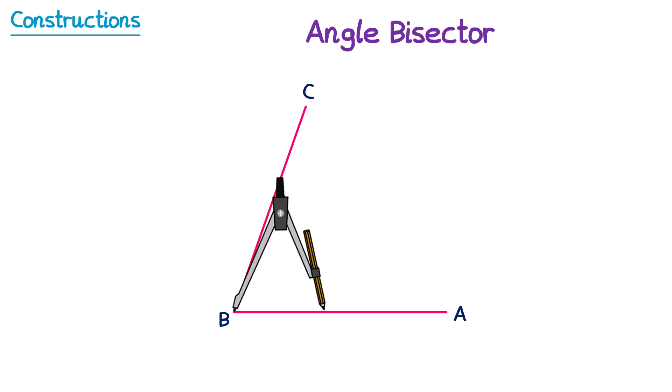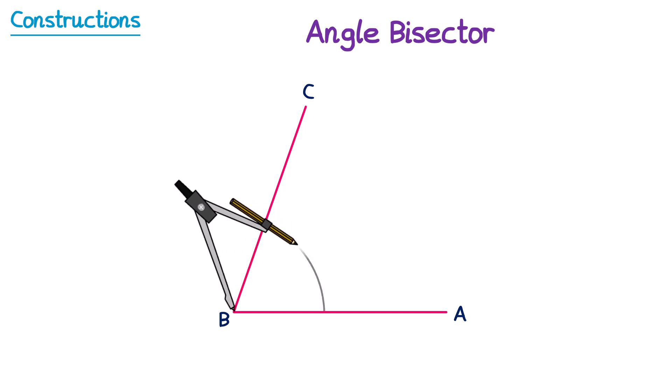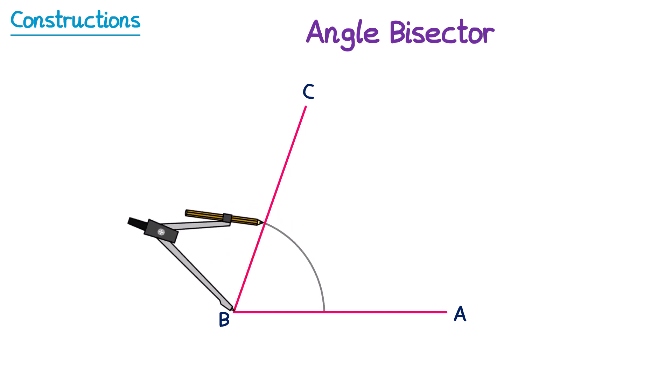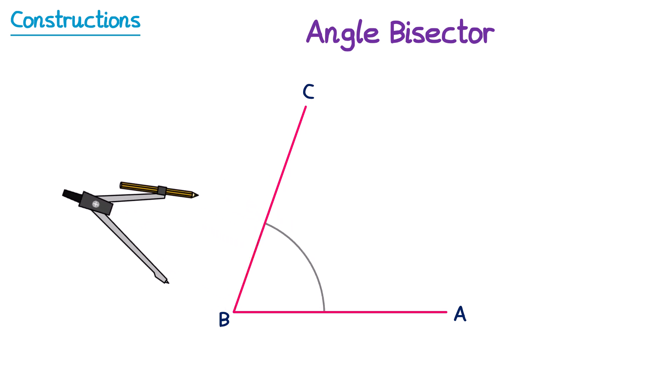We then construct an arc that goes through the lines AB and BC, like this. This arc crosses those lines in two places. I'm going to label them as E and Q. You don't actually need to mark these labels on, but it will help me explain what to do next.